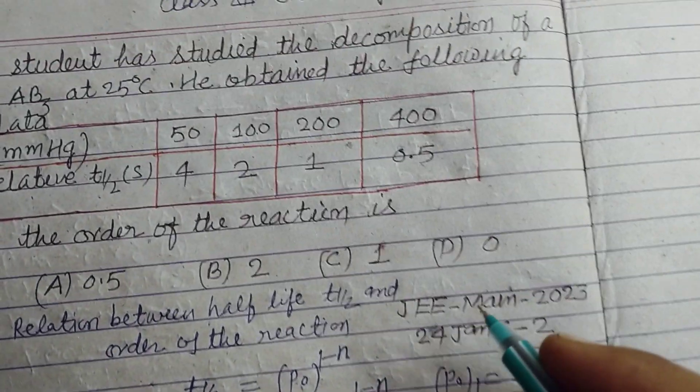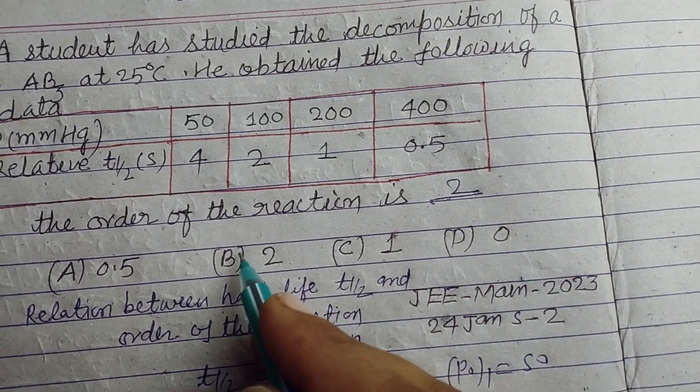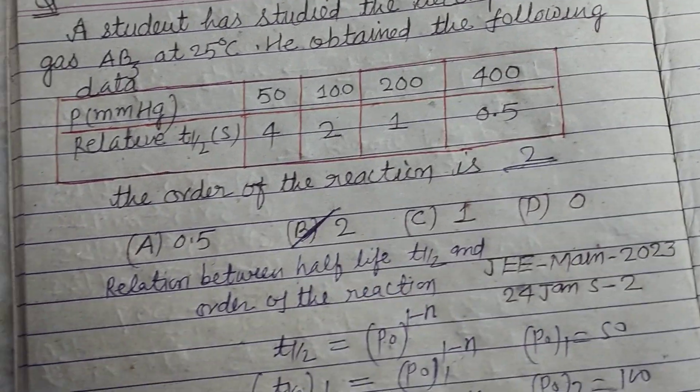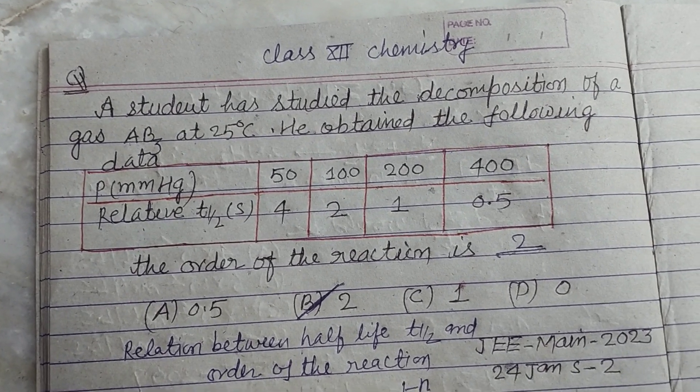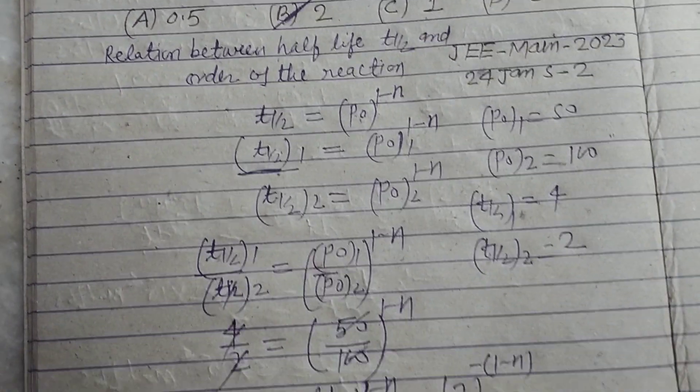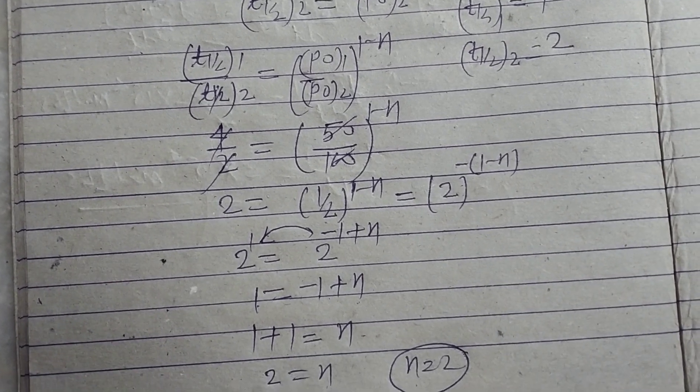So student, the order of this reaction is 2, which is found in option B. Option B is given in this question. So student, I hope you got it. Like the video, subscribe the channel, thanks for watching.